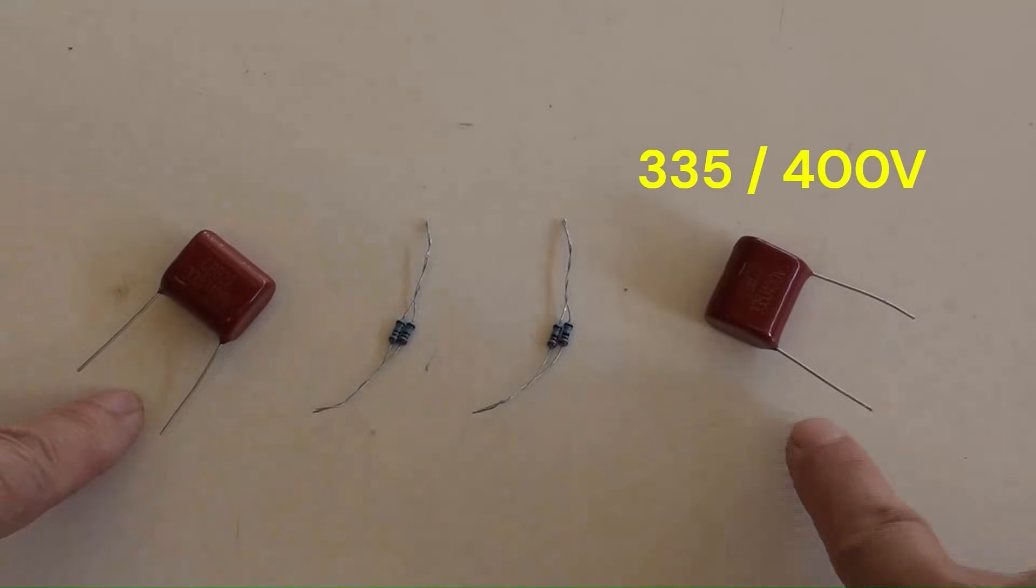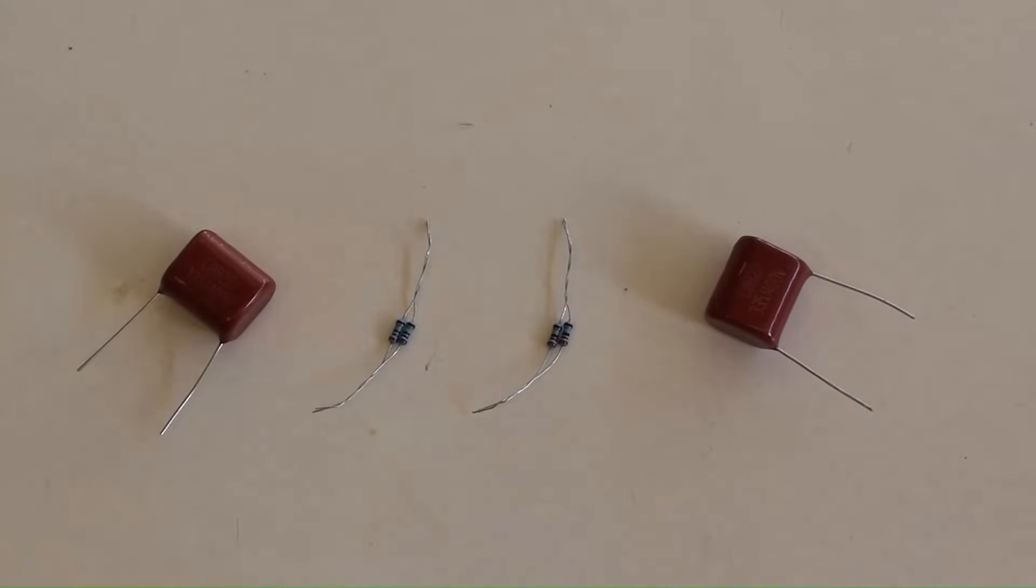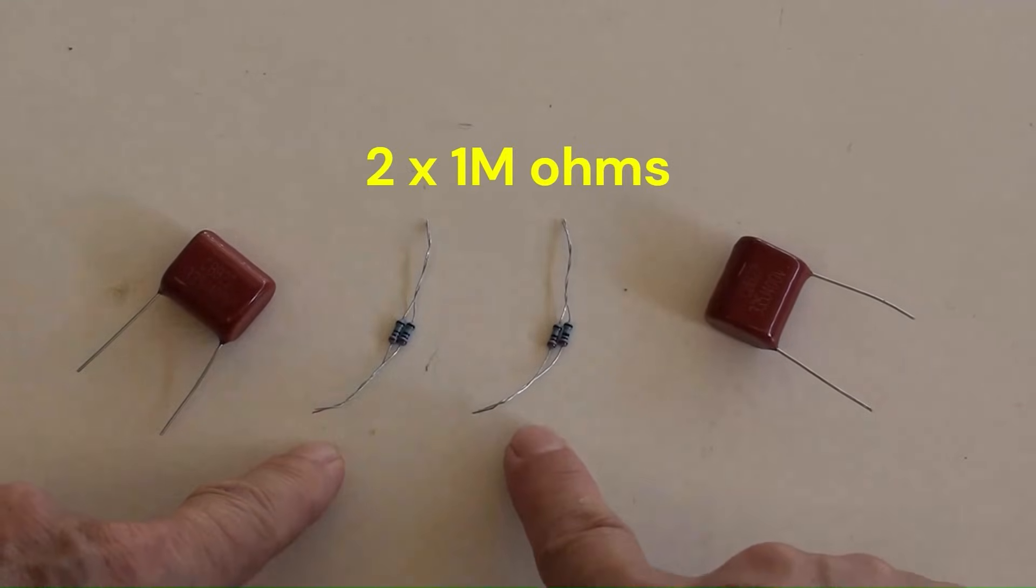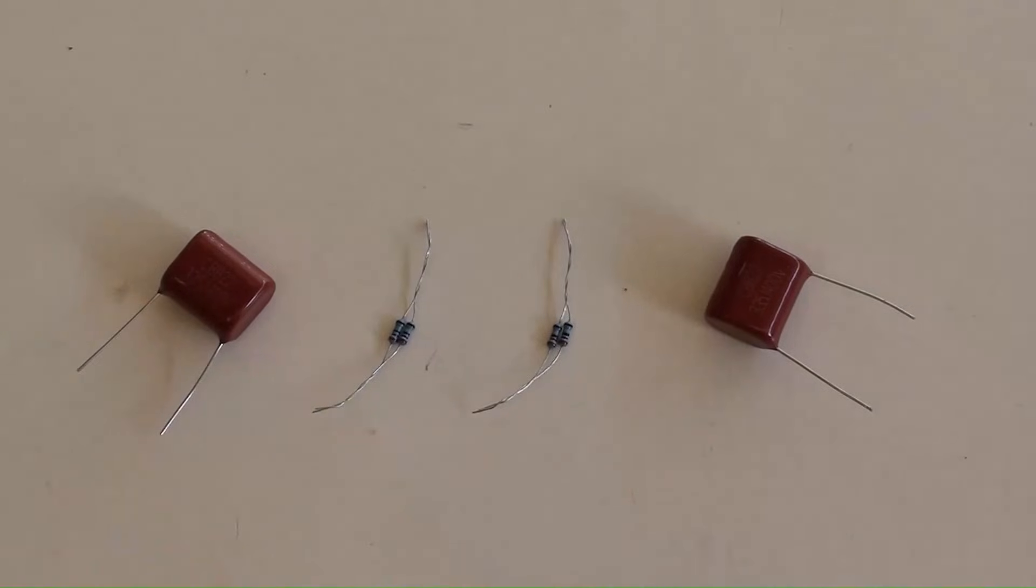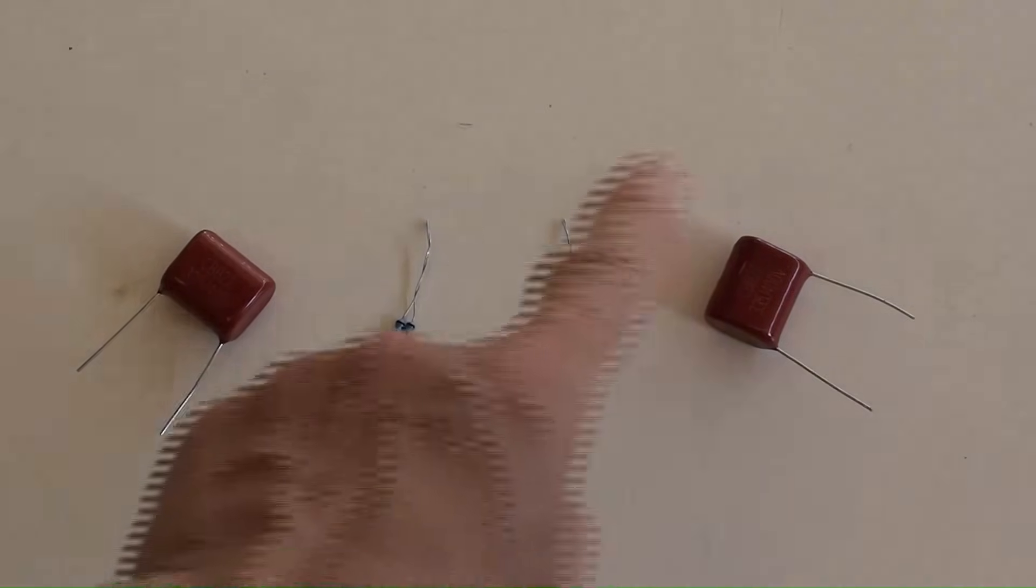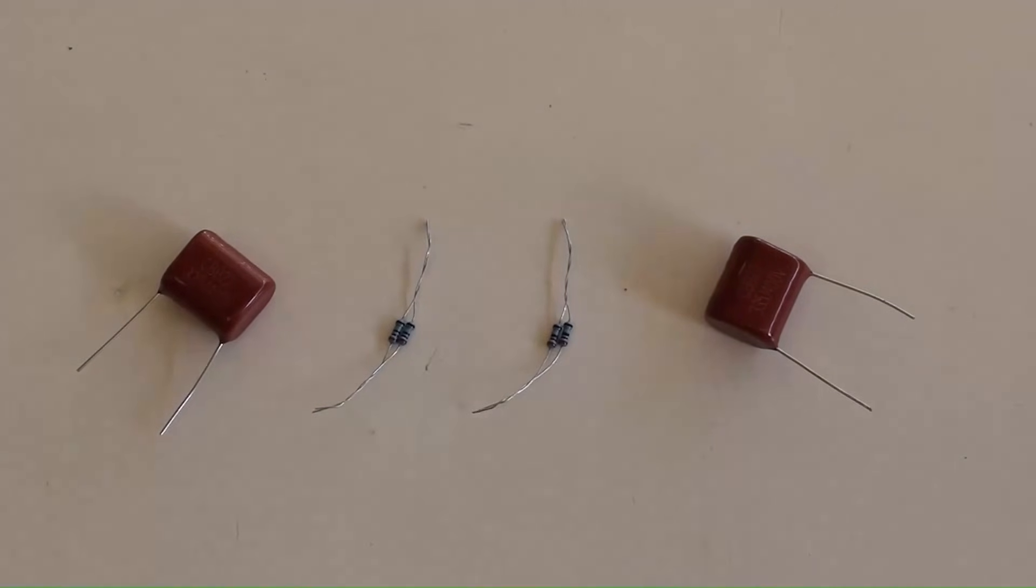By using a pair of capacitors and a pair of resistors connected correctly, one can get the voltage of AC 115V from the voltage of AC 230V.